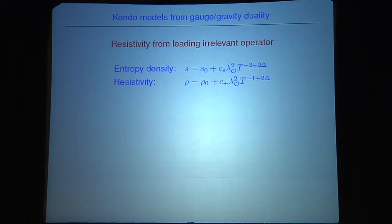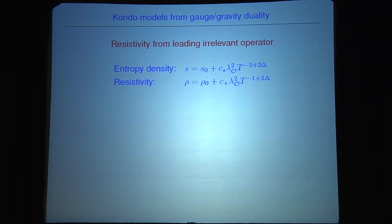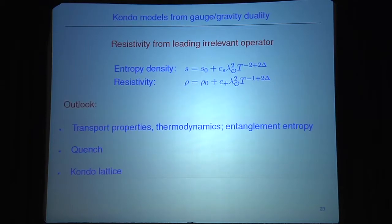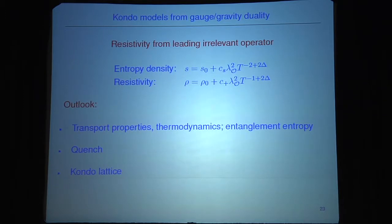What we get is a power law for the resistivity with a real number bigger than one in the temperature dependence. Condensed matter physicists tell me this is very interesting because this is the behavior expected for a Luttinger liquid. This is clearly a sign that this can be relevant for describing strongly-coupled systems coupled to such an impurity. In the future we should have a closer look at transport properties, thermodynamics, entanglement entropy via back-reaction, time dependence via a quench, and this is also a starting point for studying Kondo lattices.